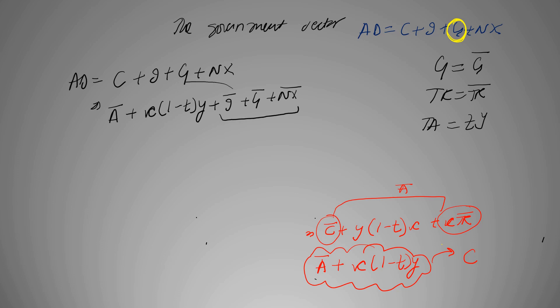this side, assuming all exogenous terms to be A, we get A plus C(1 minus T)Y. So now this is our aggregate demand when government sector is actively present.